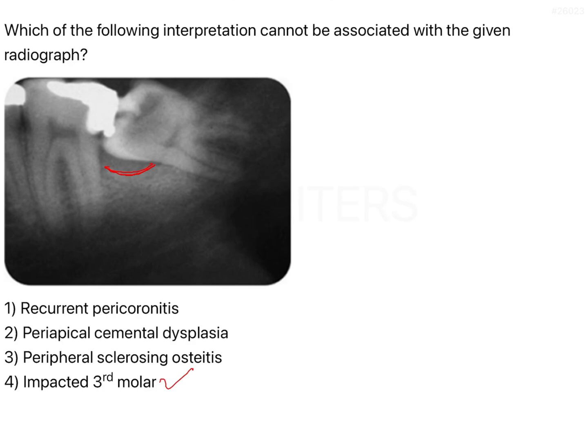Whenever you have an impacted tooth, the two most important complaints are pain and food lodging. Food lodging occurs because there is a pericoronal flap — the oral mucosa present when the third molar is partially erupted. Food can easily get lodged in that region, and because of difficulty in cleaning, it becomes a problem.